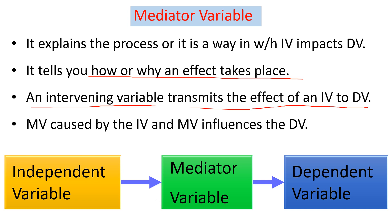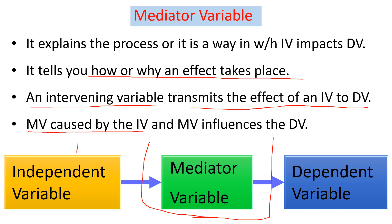We place the mediator variable in the middle. From the picture, we can see that the mediator variable is caused by the independent variable, and the mediator variable in turn influences the dependent variable. Considering one side of the model, the mediator variable acts as the dependent variable for the independent variable. Considering the other side, the mediator variable becomes the independent variable for the dependent variable.